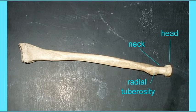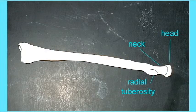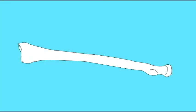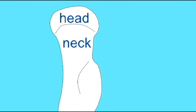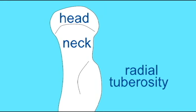The radius has a round head which articulates with the capitulum of the humerus, a constricted neck beneath this head distal to it, and then a radial tuberosity which is the insertion for the biceps brachii muscle.